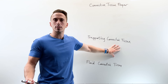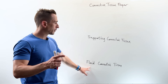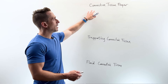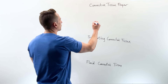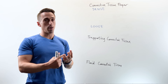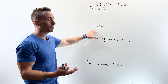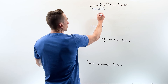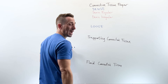Under connective tissue proper, you can have two subcategories: dense and loose. Dense means the cells, gels, and fibres are densely packed together. Loose means they're loosely arranged. Under dense connective tissue proper, you can have dense regular, dense irregular, and elastic.